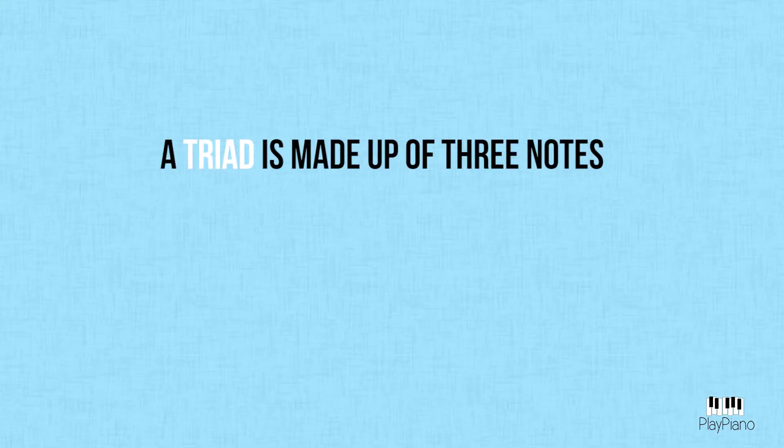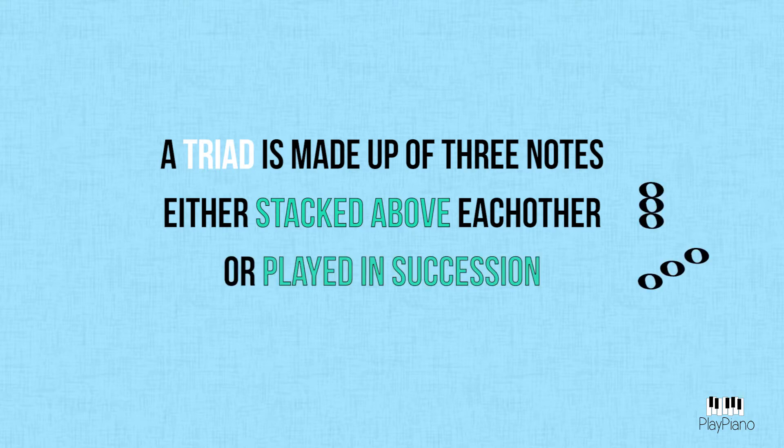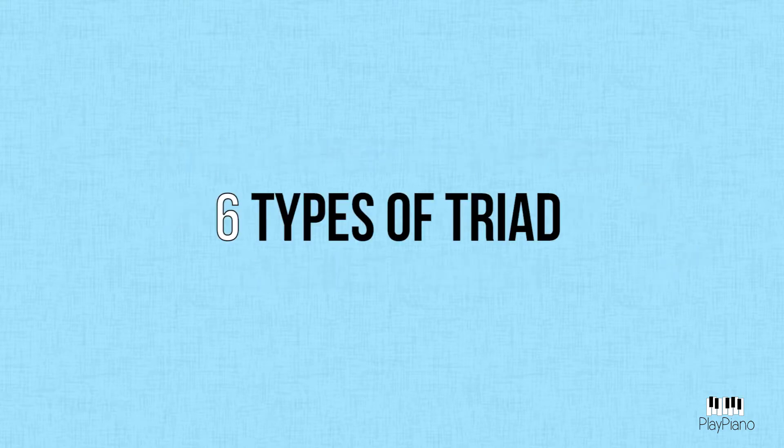Welcome to our 18th episode in our Theory Playlist here at PlayPiano. Today is a real turning point in our music theory journey. We will be looking at the different types of three-note chords, or triads. A triad is made up of three notes that are either stacked above each other or played in succession. There are six types of triad, and each can be dissected into two stacking intervals. Let's take a quick look at them.